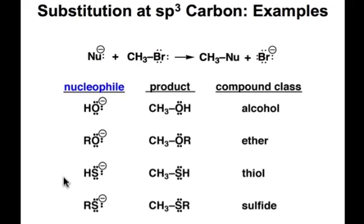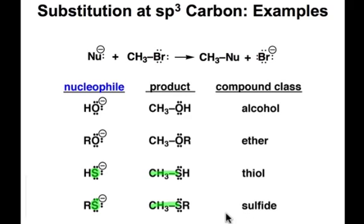The next two reactions are perfectly analogous to the first, except we've replaced the oxygen nucleophile with a sulfur nucleophile to create new carbon-sulfur bonds, as in the case of the thiol or the sulfide shown here, which derive from the sulfhydryl anion and the thiolate anion, respectively.